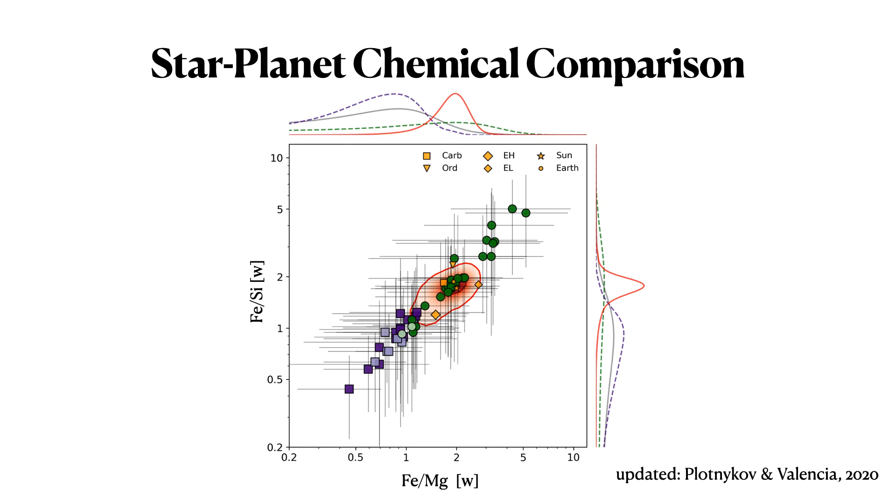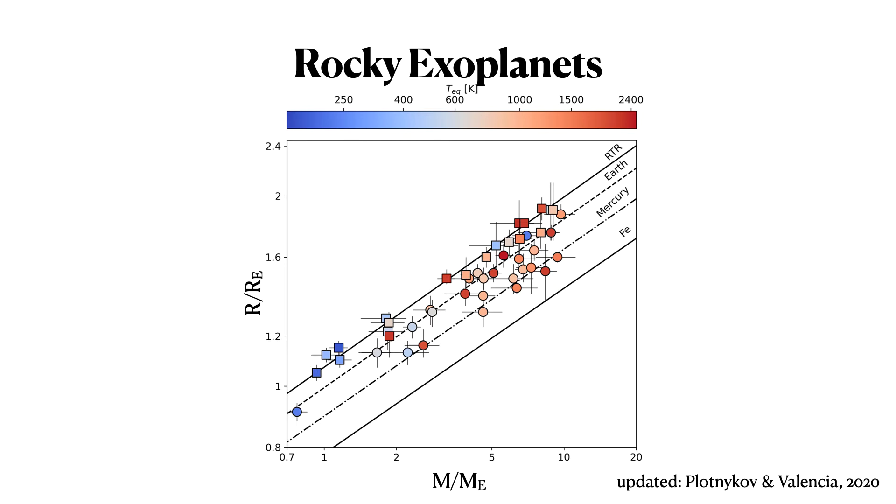And so we did this, and here are the main results. So this is a figure showing you the iron to silica by weight ratio versus the iron to magnesium by weight ratio for the planet's in our sample. I forgot to tell you that one other thing that we did was to distinguish the planets that intersected this rocky threshold radius because they could also have a volatile component from the ones that are completely embedded within the rocky region.